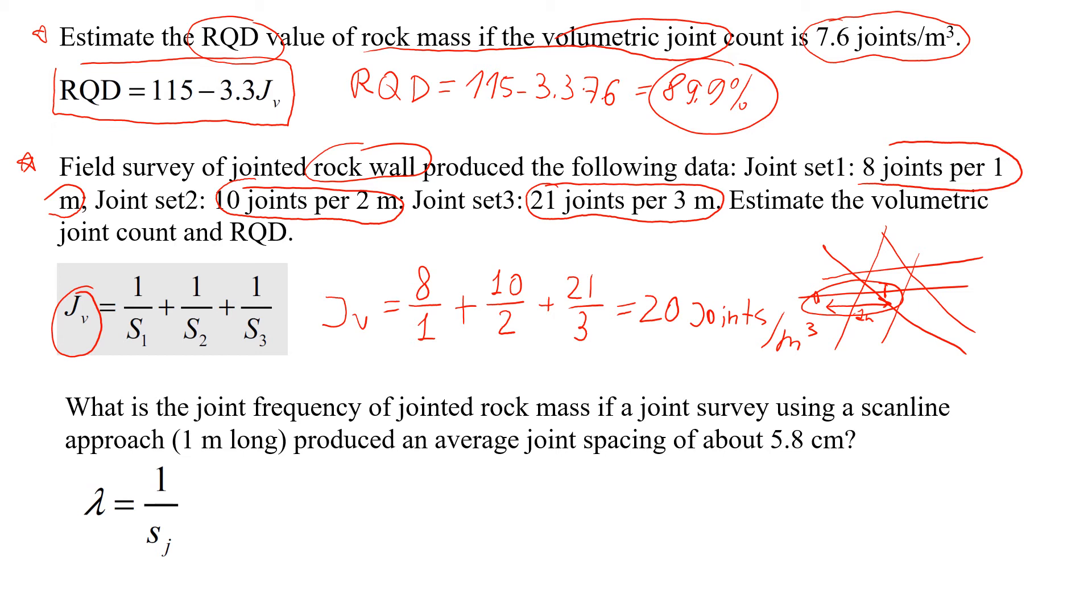And then we can do an estimation of RQD. So again we're going to use this formula. RQD is equal to 115 minus 3.3 times 20, which will give us about 49%.